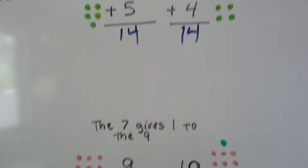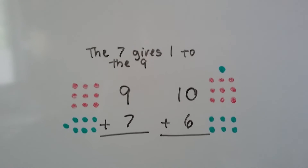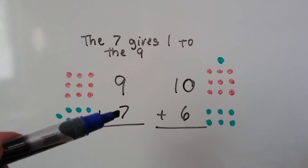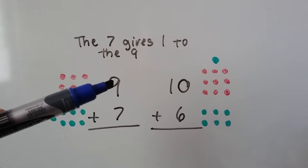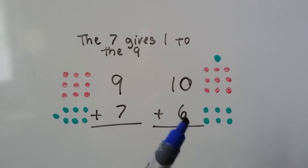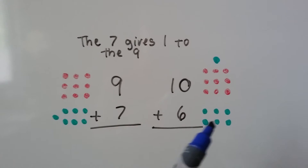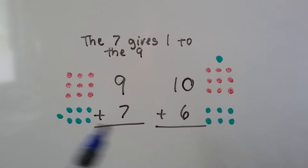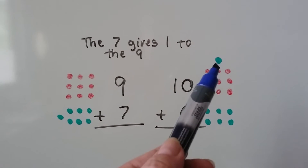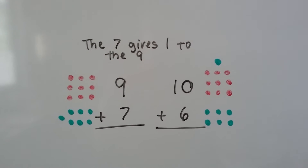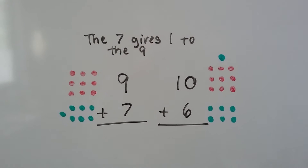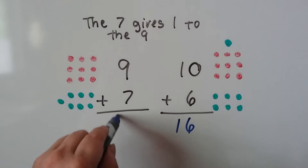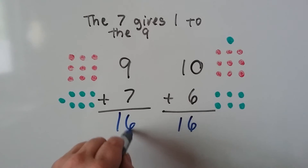Let's try it again. We have 9 plus 7. The 7 can give 1 to the 9; it's going to become a 6. We gave this one to the 9, so now it's up there and now we have 10 plus 6. 10 plus 6 is 16, so 9 plus 7 must be 16.